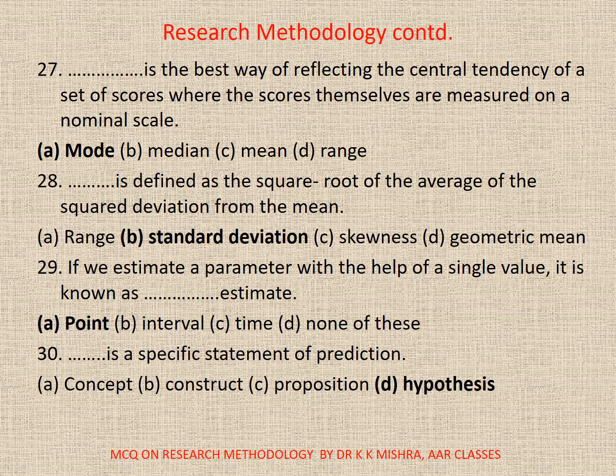Question 28: Dash is defined as the square root of the average of the squared deviation from the mean. A. Range. B. Standard deviation. C. Skewness. D. Geometric mean. Correct option is B. Standard deviation.